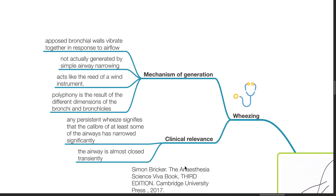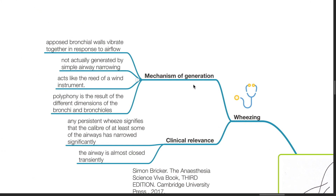Regarding wheezing, the mechanism of generation of wheezing is caused by opposed bronchial walls vibrating together in response to airflow. It is not actually generated by simple airway narrowing. This acts like a reed of a wind instrument, and polyphony is the result of different dimensions of the bronchi and bronchioles.